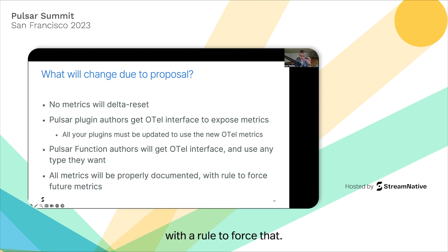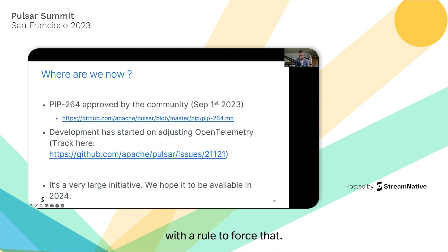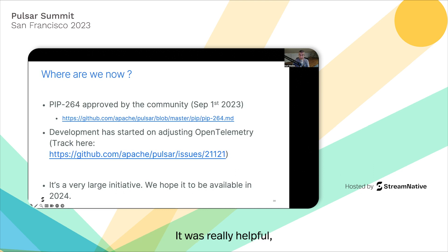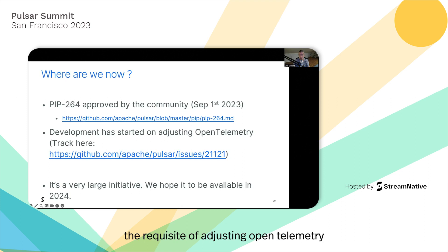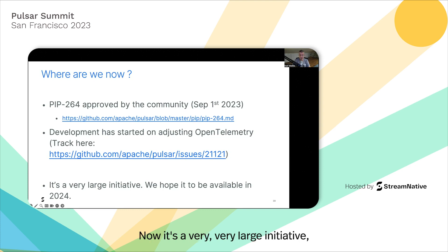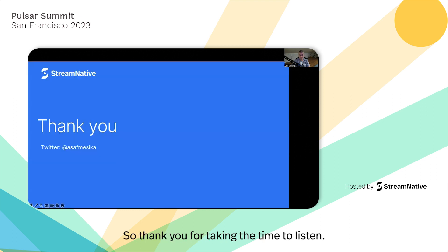All metrics will be properly documented with a rule to enforce that. Where are we now? PIP 264 was approved by the community — it was a huge effort. Thanks to the people at StreamNative who helped me and the community that reviewed it. It's been approved since September 1st, and work has started on adjusting OpenTelemetry to run inside a low-latency server like Pulsar. That's in progress — you can track it using the issue mentioned. It's a very large initiative, so we hope it will be available in 2024. Thank you for taking the time to listen.